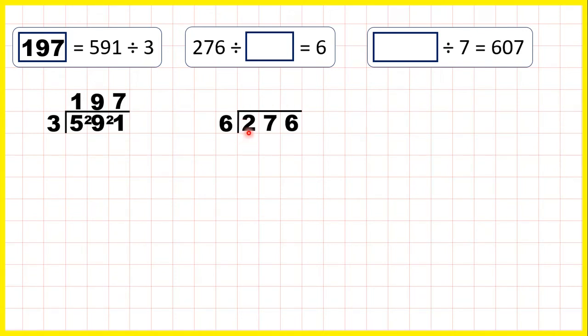So there's no point doing 2 divided by 6, because 2 is less than 6, so let's take the first two digits together and work out 27 divided by 6. That's 4 remainder 3, because 4 times 6 is 24.